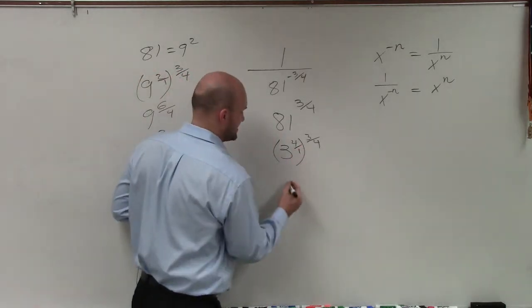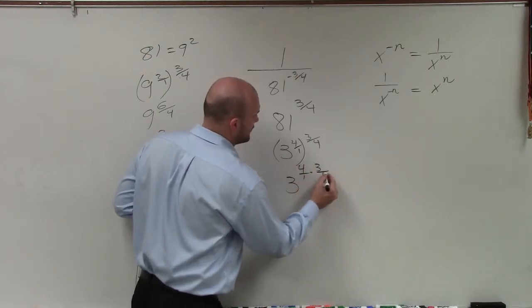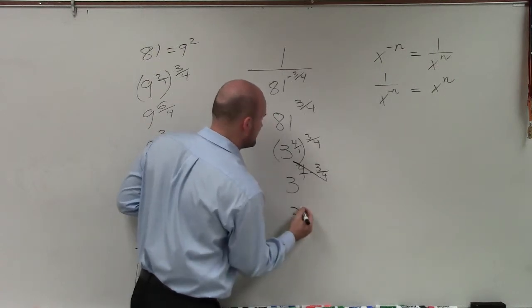But now, when I use my rules of exponents, I have 3 to the 4 over 1 times 3 over 4. Those cancel out, so I'm left with 3 cubed.